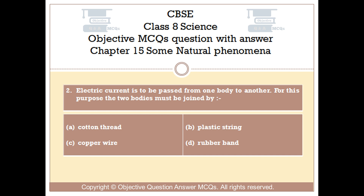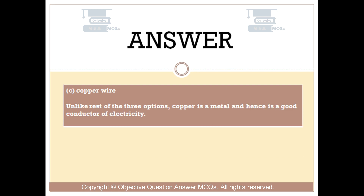The right answer is Option C — Copper wire. Unlike the rest of the three options, copper is a metal, and hence is a good conductor of electricity.